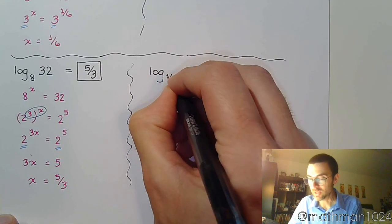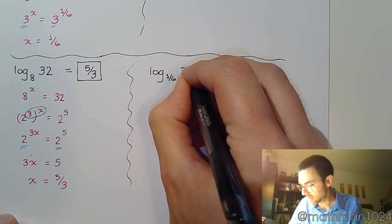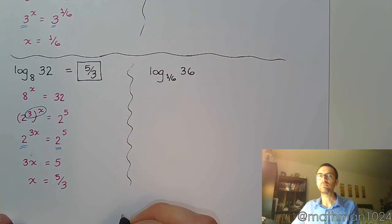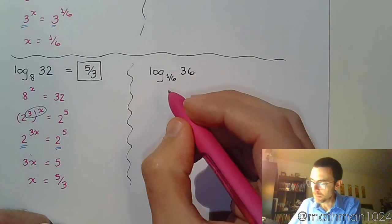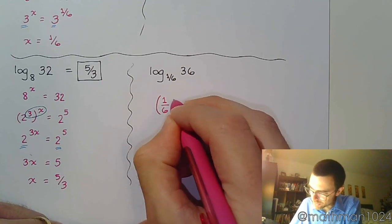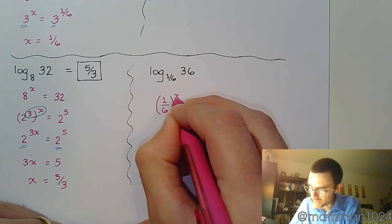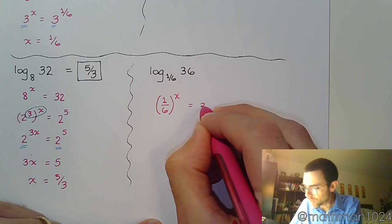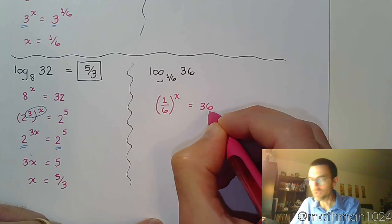So log base 1 sixth of 36. This looks kind of gross. But, again, if I go back and I work this guy like an exponential equation, it may not be so bad. My base is 1 over 6. And I'm trying to find the power of this that's going to equal the expression inside the logarithm, which is 36.